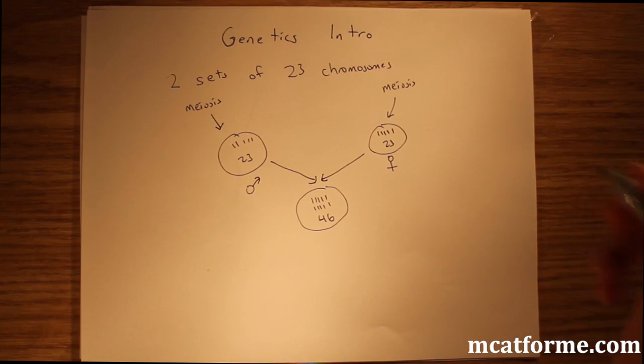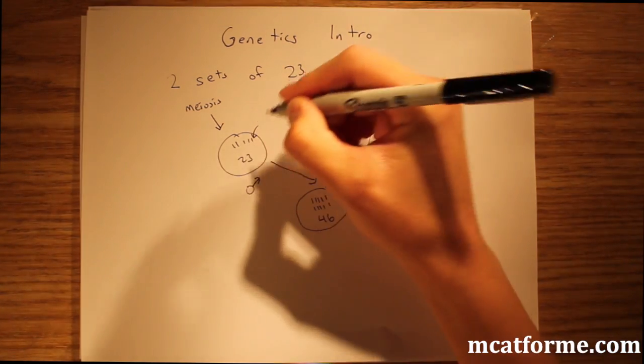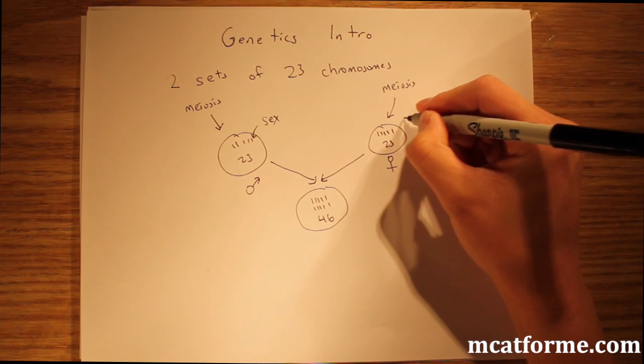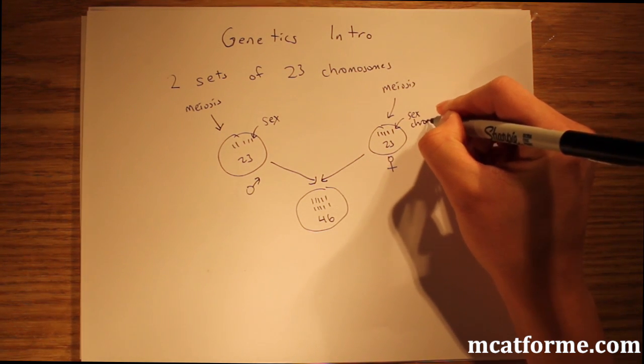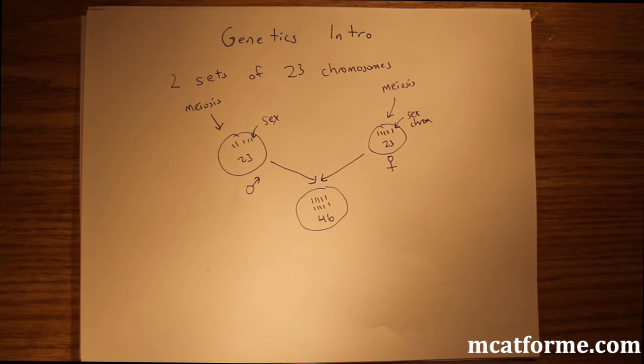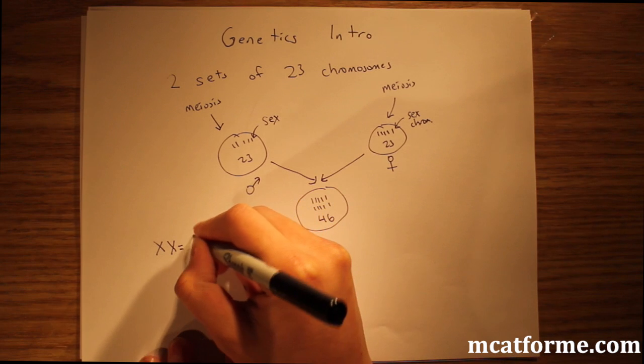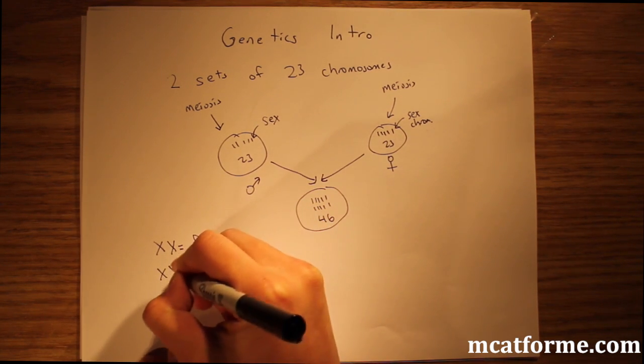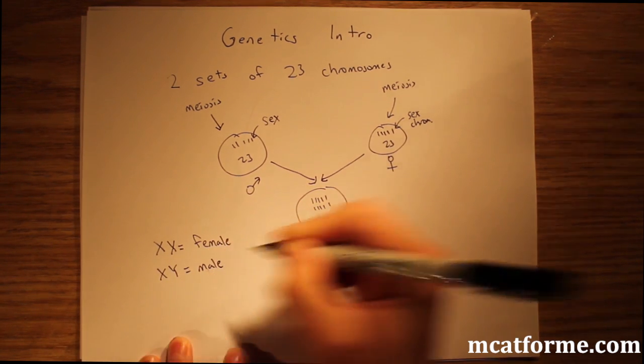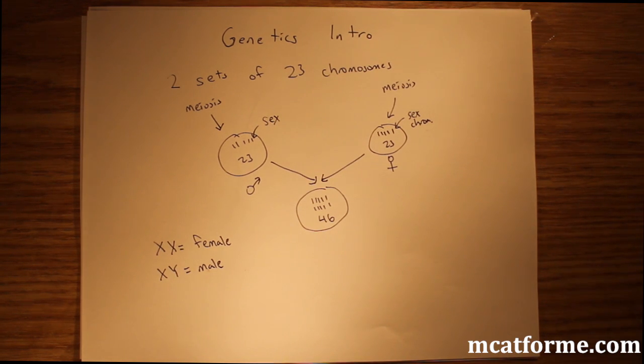One thing we have to note is that one of these, the 23rd chromosome, is going to be something called the sex chromosome. The sex chromosome is what determines the actual sex. XX equals female and XY equals male. This is very important, especially when we get to trees, because some diseases or genes are only on the X chromosome.